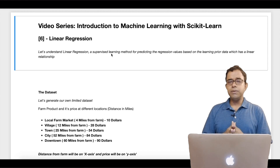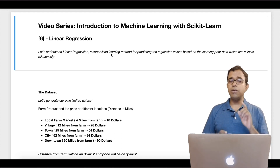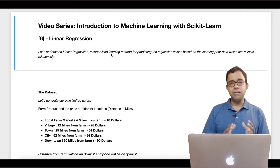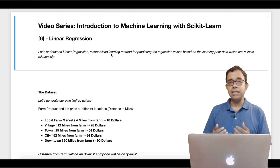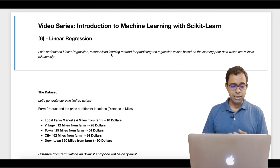Hello everyone, welcome to the video series on introduction to machine learning using scikit-learn. This is chapter 6, and in this particular chapter we will talk about our first machine learning algorithm called linear regression. In this chapter we will not only understand what linear regression is, but also understand how we can invoke machine learning functionalities provided by scikit-learn. Let's go ahead and start.